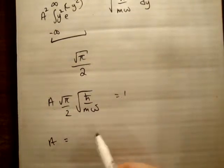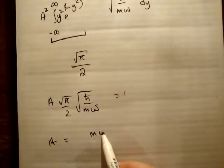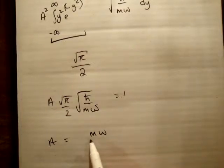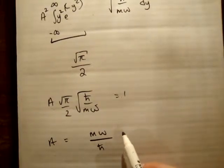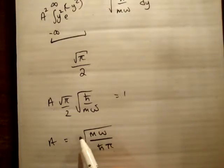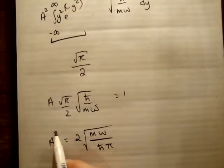So let's just rearrange this. We're going to get A is equal to m omega divided by h bar, and the π is there as well. That's square root it, and your 2 is up here like that, and that's A squared.